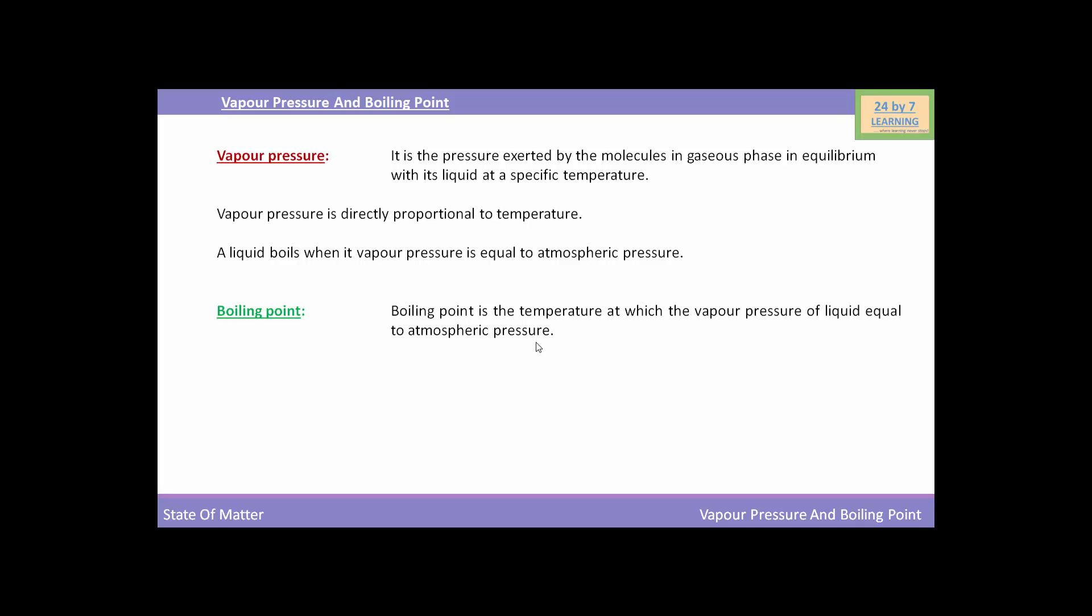Next, we are going to discuss the effect of external pressure on boiling point. Normally, at standard conditions, water has a boiling point of 100 degrees Celsius. Variations in pressure have an effect on the boiling point of water. If you increase the pressure, the boiling point will increase because more energy will be needed to raise the vapour pressure to the increased atmospheric pressure.